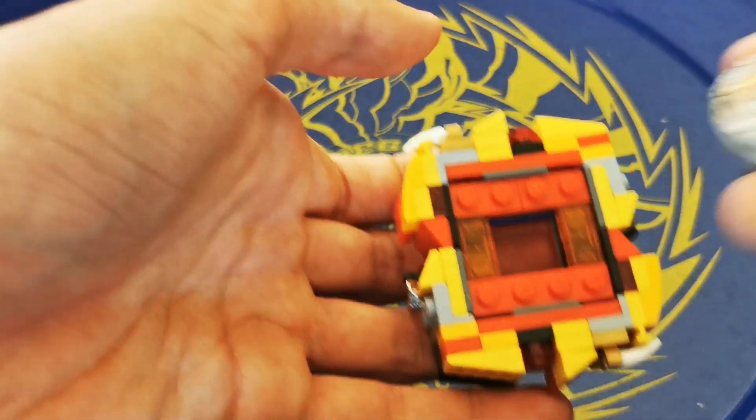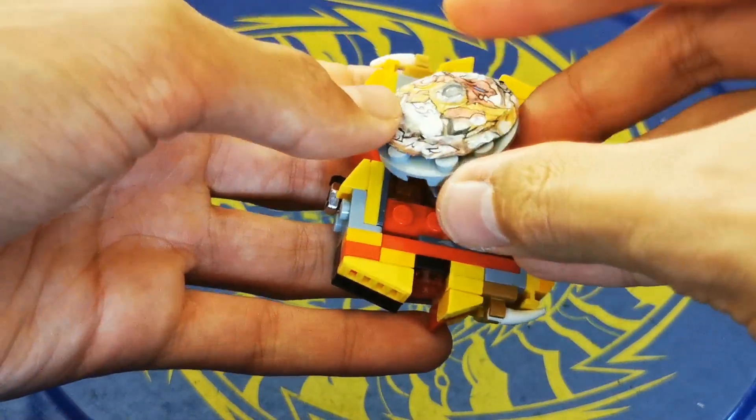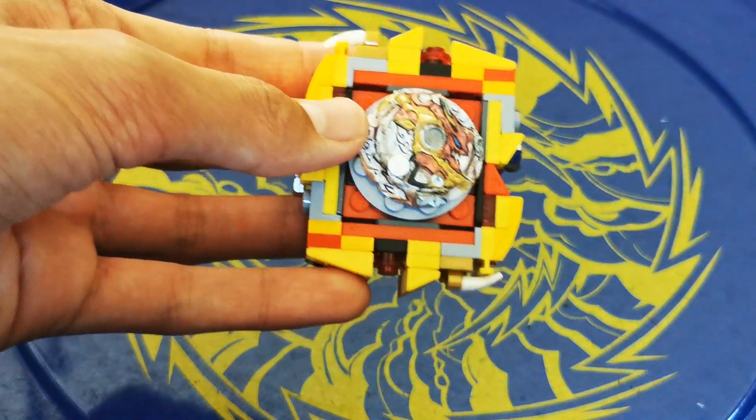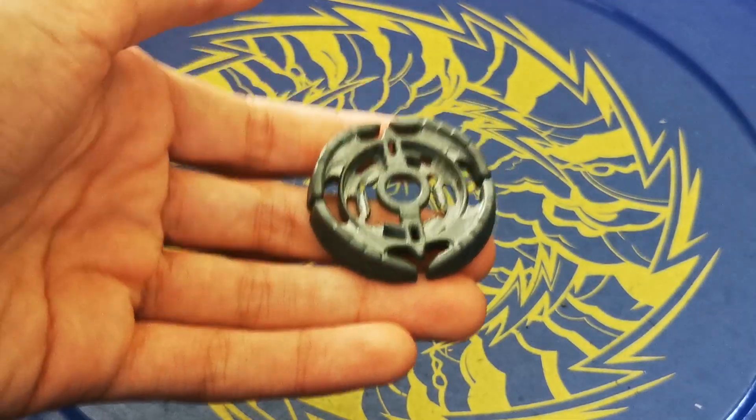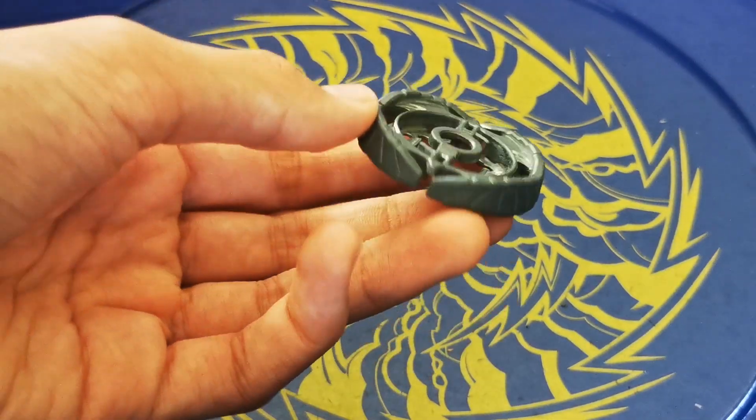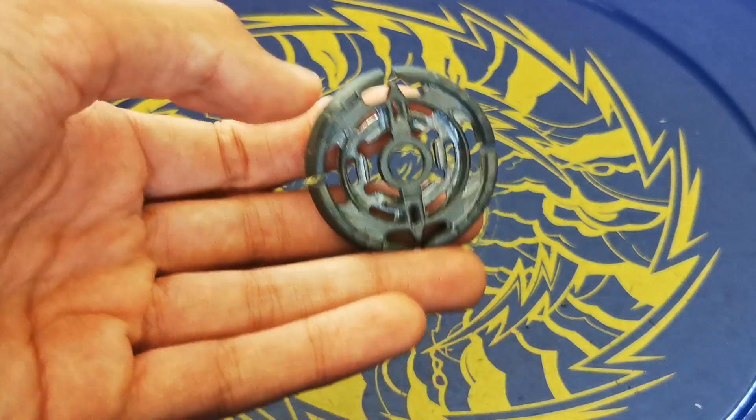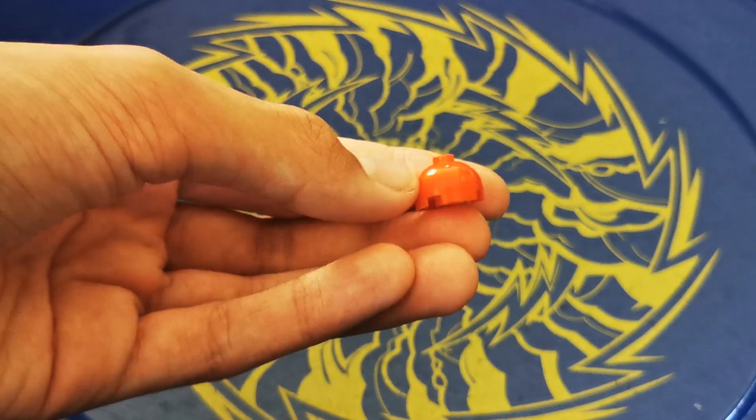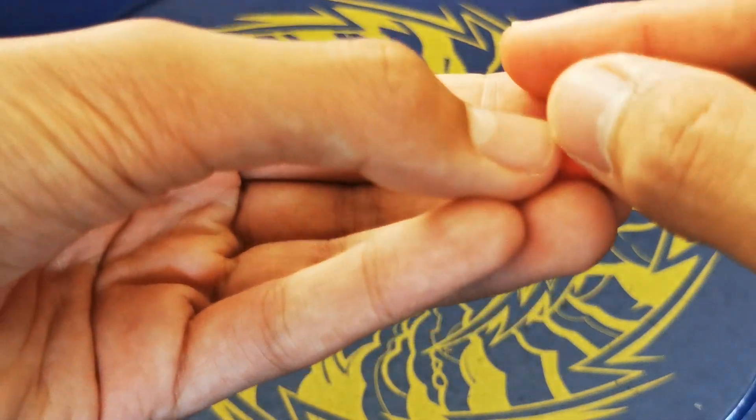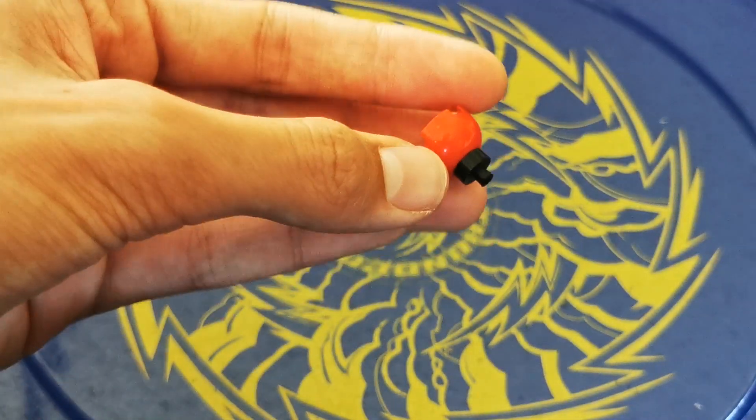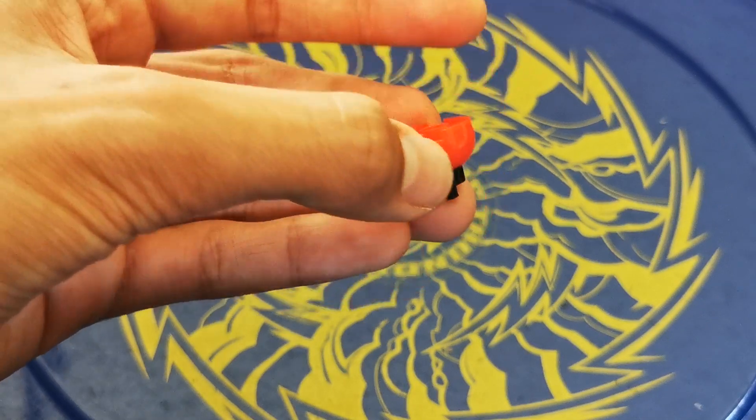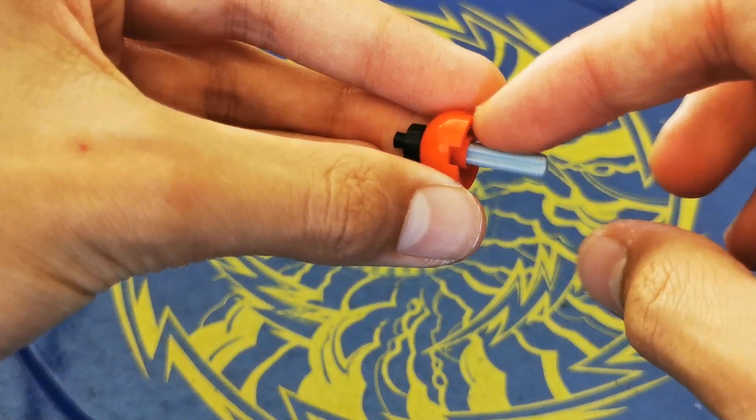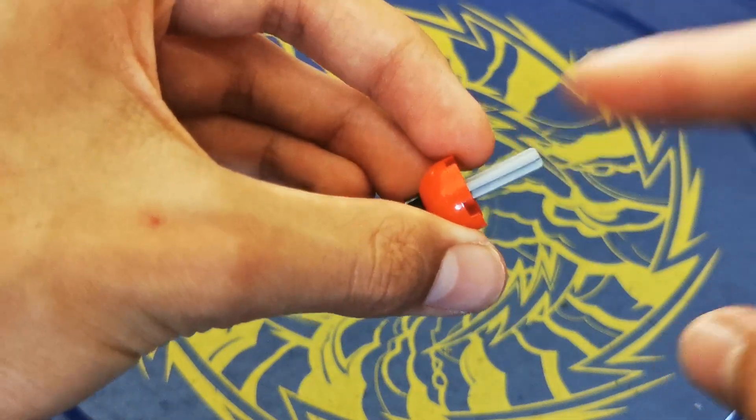Now you can attach the chip here or on the other side if you would like. Now grab this metal fusion piece. I don't believe it overly matters for this Beyblade, but this one just looks the best. Now get this red domed piece and this 1x1 stud with a pole sticking out of it. And get a Technic axle the length of a 1x3 tile and put it in there.